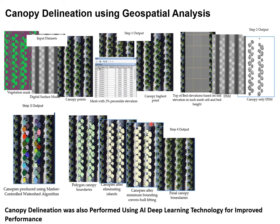We developed GIS — geographic information system — and geospatial analysis models to extract information from the plants, such as the size of the plants. We also needed to delineate the plants, and since this cannot be done manually — it's a very cumbersome job — we had to do it automatically. We developed algorithms to delineate the canopies and extract three-dimensional information from each delineated canopy, using both traditional geospatial analysis and artificial intelligence techniques — training the model on images so that the computer produces delineated canopies automatically.